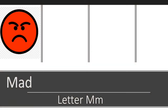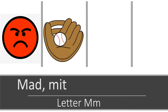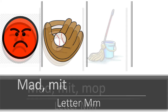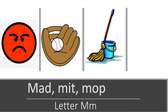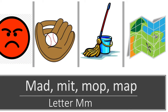Now let's sound out some M words. Like M-A-D: MAD. M-I-T: MIT. M-A-P: MOP. M-A-P: MAP.